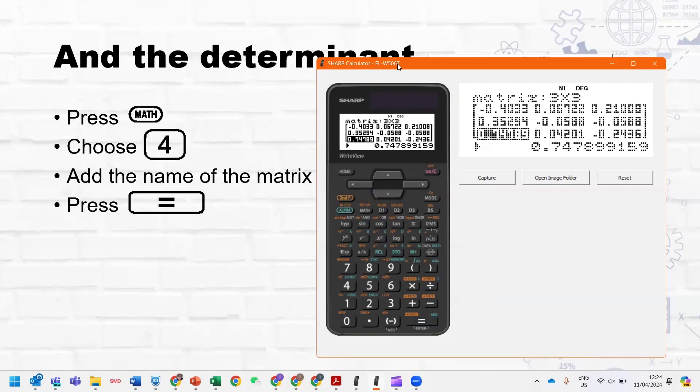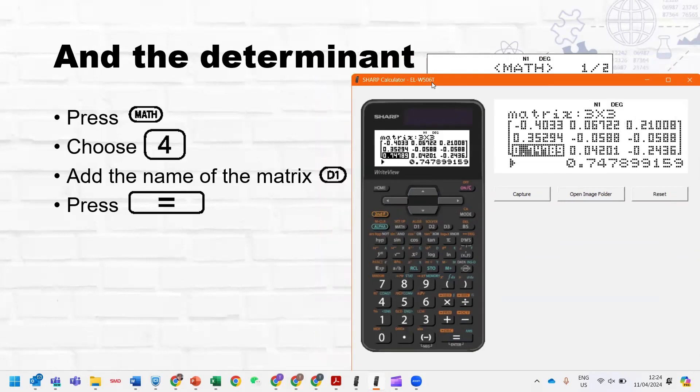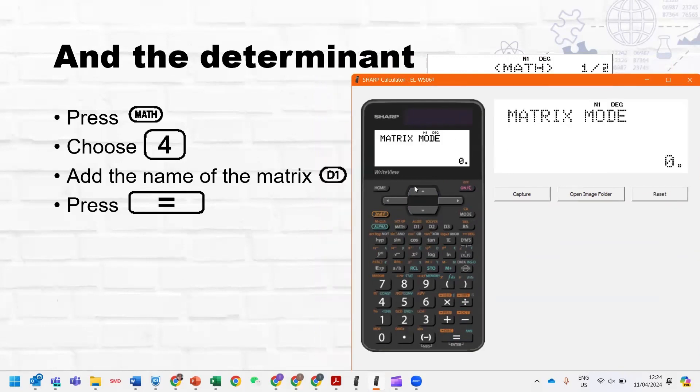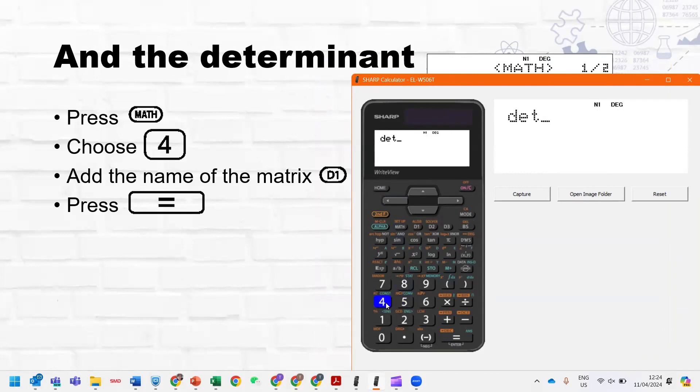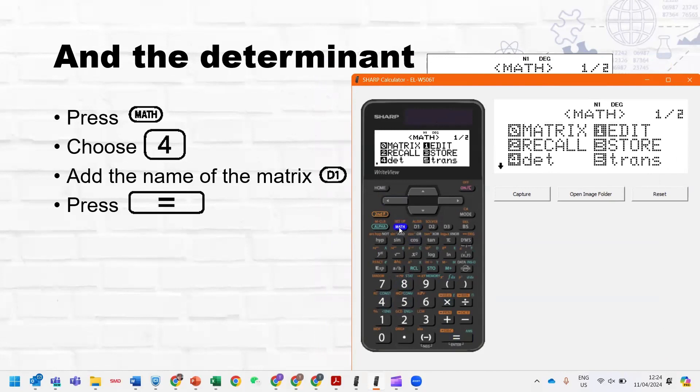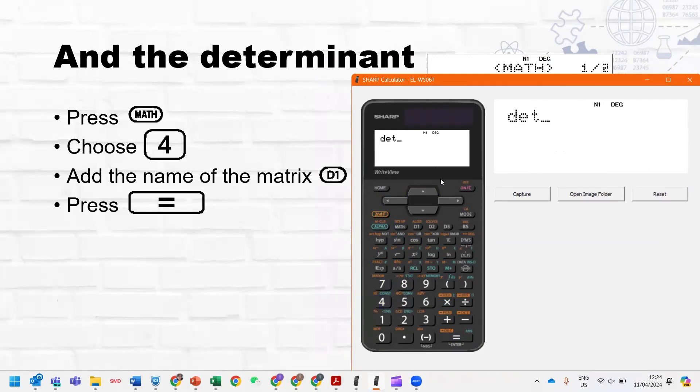All right. From there, we can then find the determinant. And to do that, we would simply say math, and we'll choose four for determinants, and then press the name of the matrix we want a determinant of, and press equals. For the determinant of matrix B, math, four for determinants, and then D2 for matrix B, and that's our determinant.